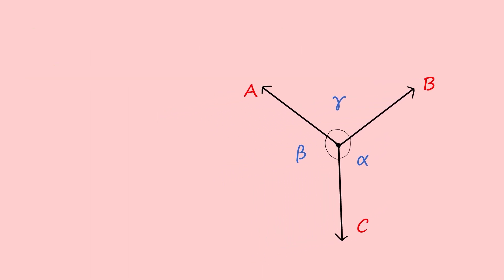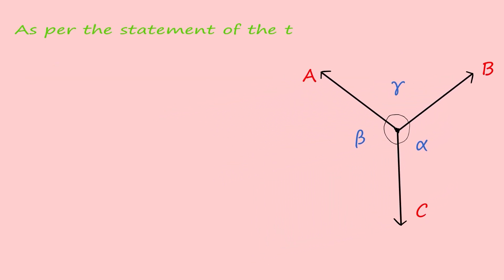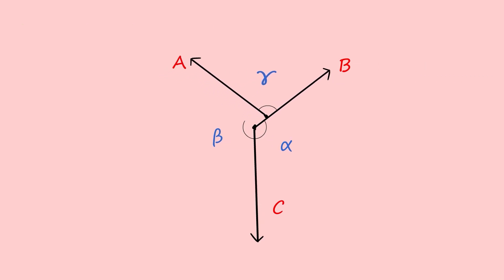As per the statement of the theorem, we take the sum of all the forces acting at a given point as zero. On shifting the forces, we can convert it into a triangle.